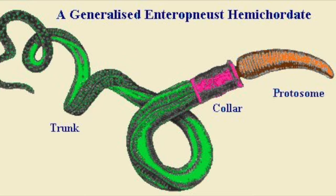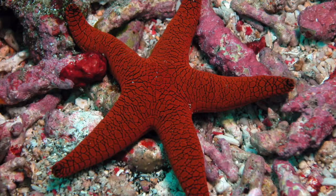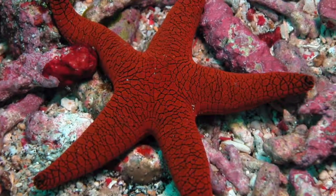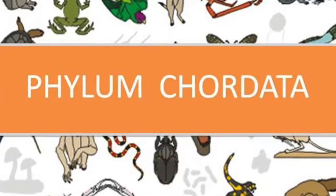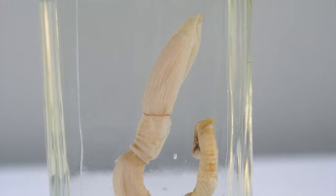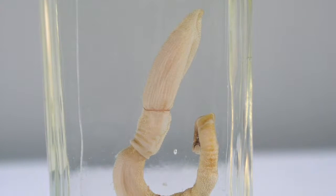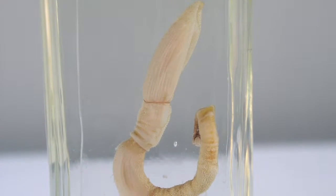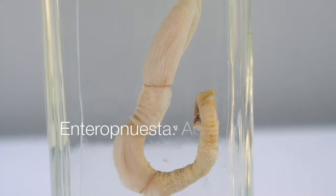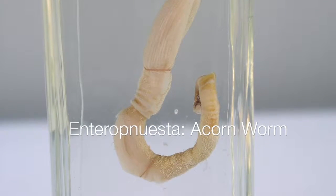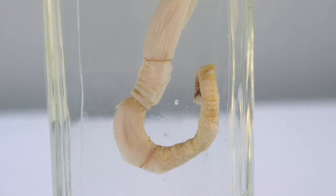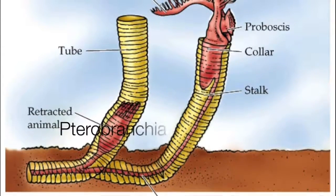Hemichordata are worm-like creatures that make up a small phylum of just a few hundred species and are the sister taxa to echinoderms and chordates. Phylum Hemichordata consists of two classes. The most common living group is Enteroneusta, often called acorn worms, followed by Pterobranchia.